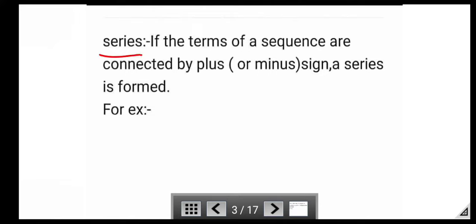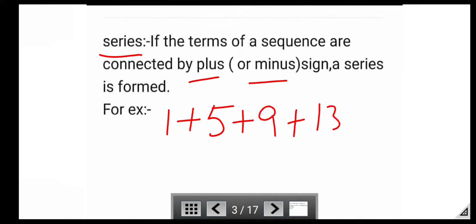Next is Series. If the terms of a sequence are connected by a plus or minus sign, a series is formed. That is, if terms of a progression are connected by plus or minus sign, then a series is formed. For example, 1 + 5 + 9 + 13 + ... and so on. Here, terms of the progression are connected by a plus sign.